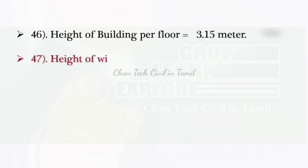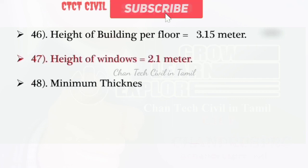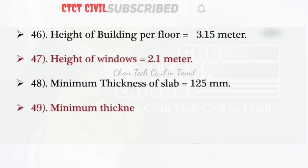Height of building per floor is 3.15 meters. Height of window is 2.1 meters. Minimum thickness of slab is 125 mm.